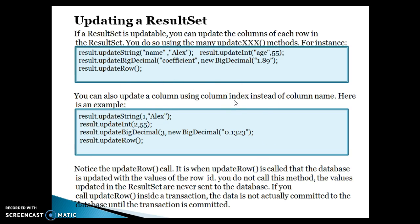If a ResultSet is updatable, you can update the columns of each row in a ResultSet. You can do so using the many update methods available on the ResultSet. There are update methods for different data types. Once you get the ResultSet object, you can call update methods — if your column value is a String, you call updateString on the ResultSet object, passing the column name and the value you want to update.